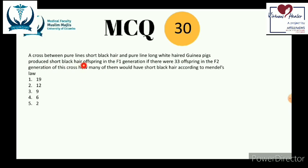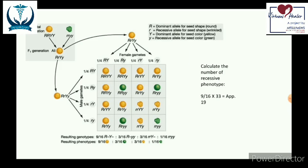Question 30: a cross between pure-line short black hair and pure-line long white hair guinea pigs produces short black hair offspring in F1. Pure line means genotype is purely recessive or dominant. Since F1 offspring all have short black hair, the dominant feature is short black hair. If the F1 generation is self-crossed and there are 33 offspring in F2, how many would have short black hair?